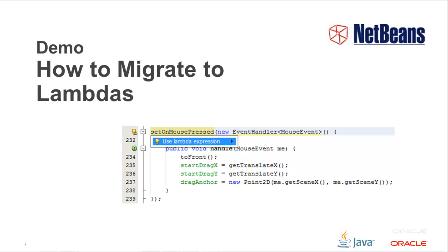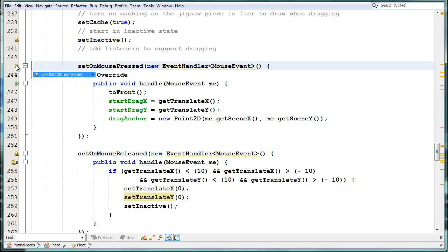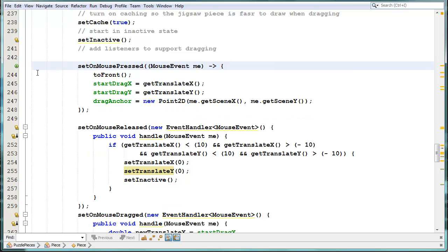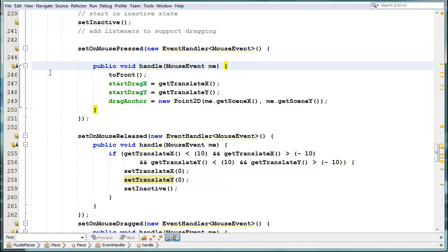In the IDE, converting anonymous inner classes to lambda expressions is easy. The IDE automatically identifies them in your code. Click the light bulb, or press the related keyboard shortcut, and then press Enter on the Java hint that appears. The IDE will do the rest to convert the structure to a lambda expression for you. Notice that here we have an anonymous inner class, that the hint shows us that we can convert this to a lambda expression, and that if you put the cursor inside the lambda expression, we can switch back to an anonymous inner class.